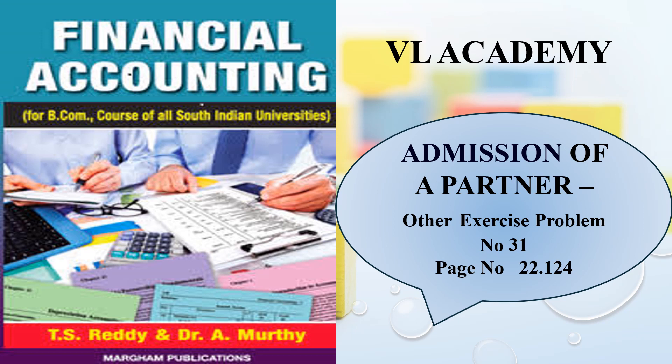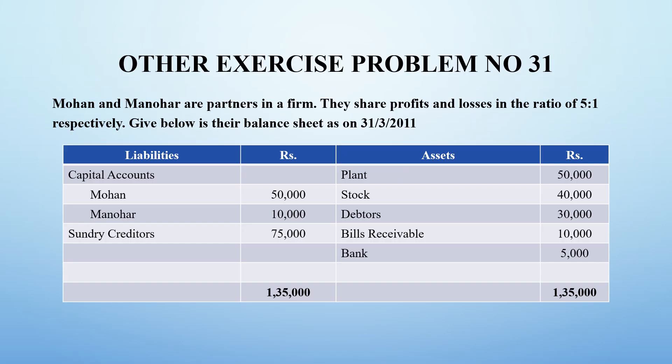Welcome to VL Academy. In this video, we are solving admission of a partner exercise problem number 31, which is on page number 22.124. In the problem, Vandha Mohan and Manohar are partners in a firm. They share profit in a 5 to 1 ratio, and this is the status of the balance sheet as on 31-3-2011.